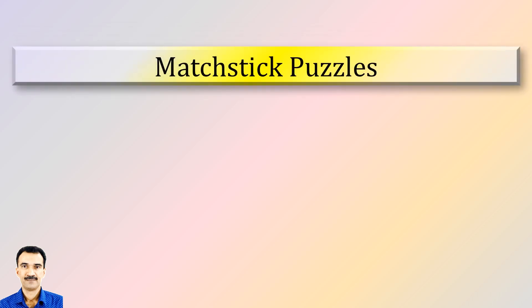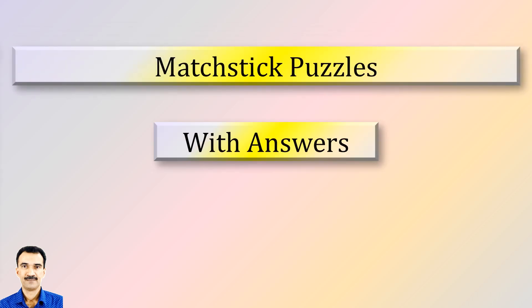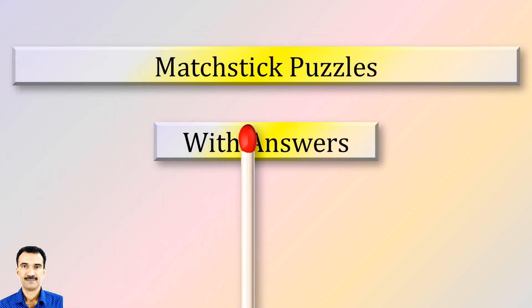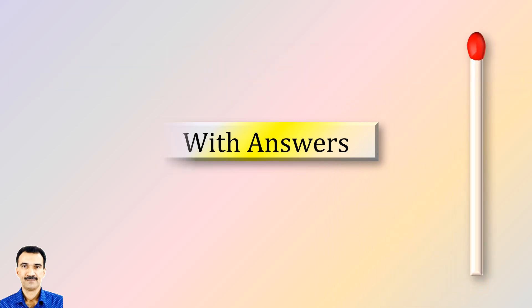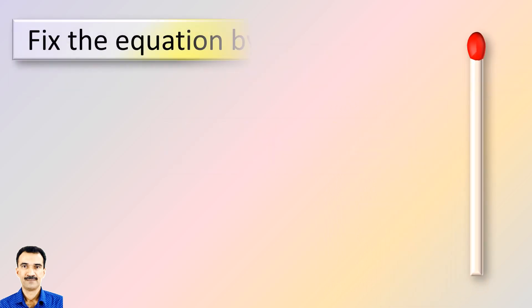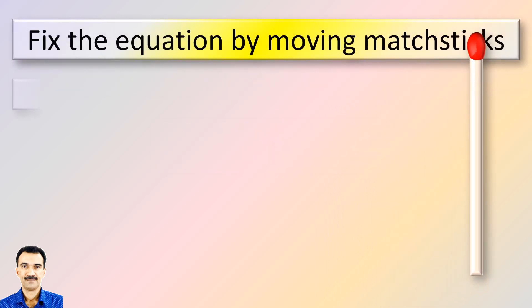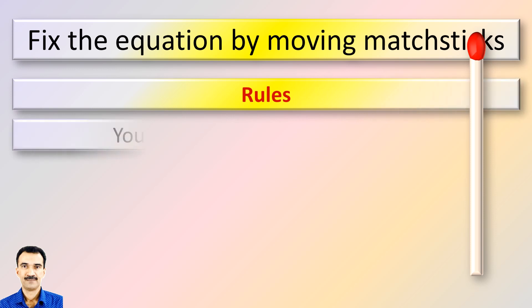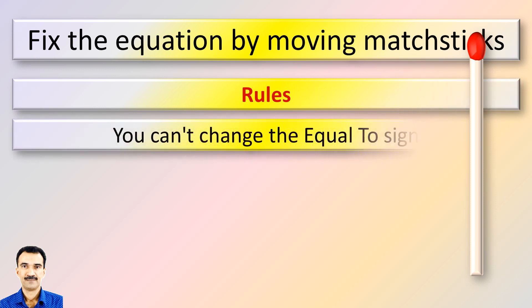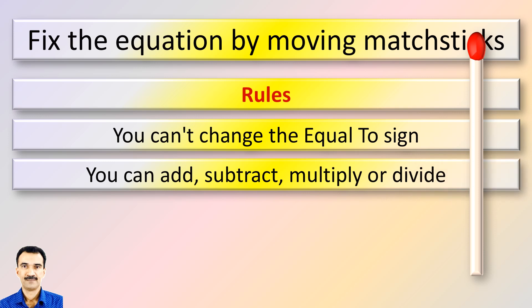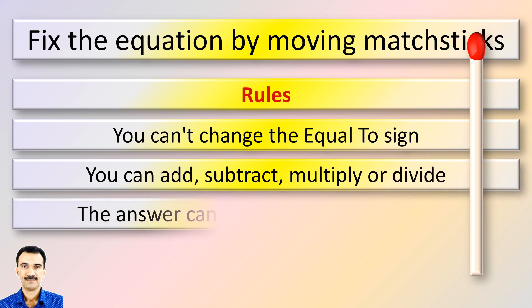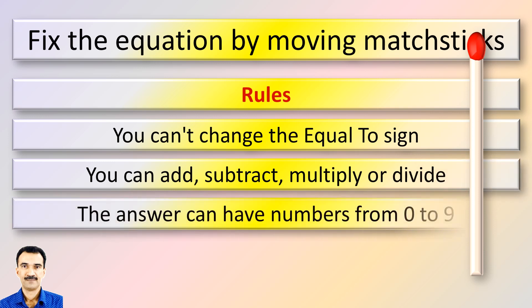Welcome to another video of Matchstick Puzzles with Answers. Please keep the rules in mind: you cannot change the equal to sign. You can add, subtract, multiply, or divide. The answers can have numbers from 0 to 9.